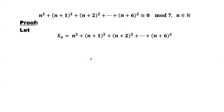We assume the general term. The first one starts from n, then n plus one, n plus two, until n plus six. That's the sum of squares of seven consecutive numbers, for any n, where n is a positive integer. So here, that's the general term.